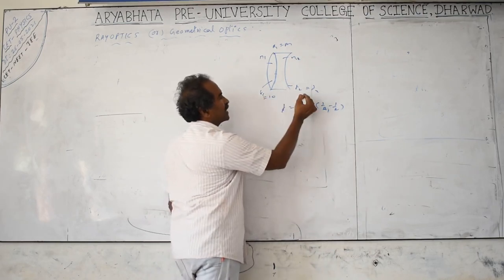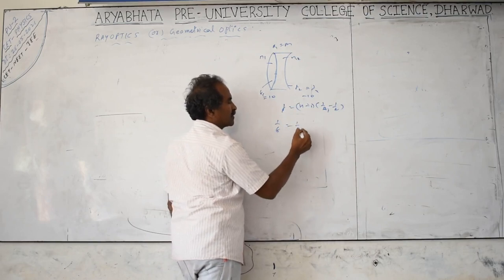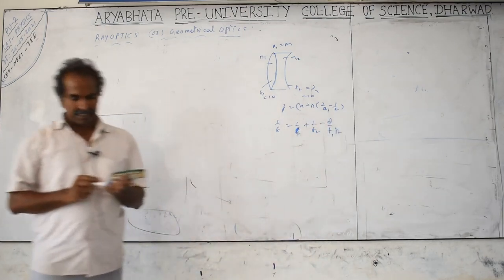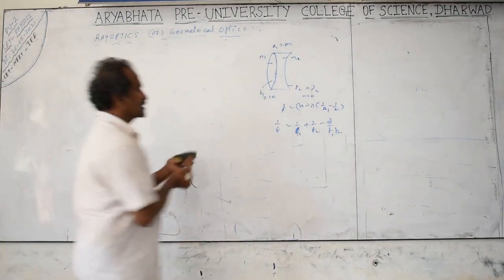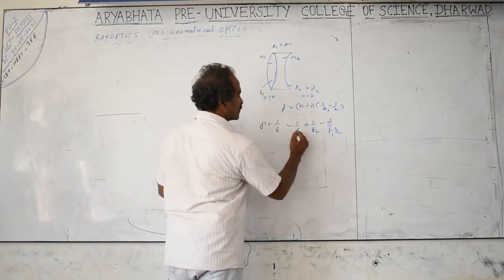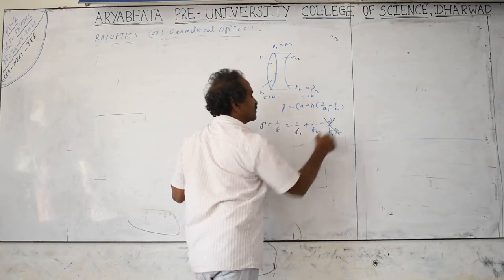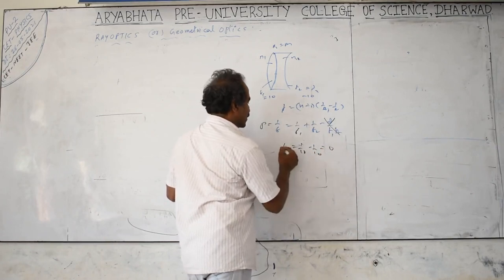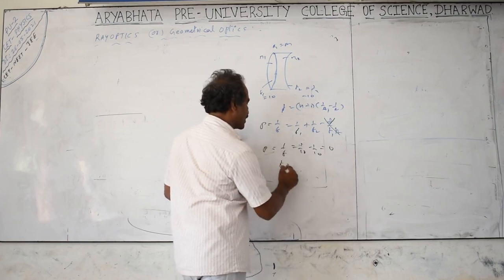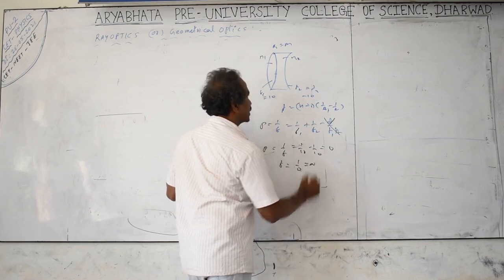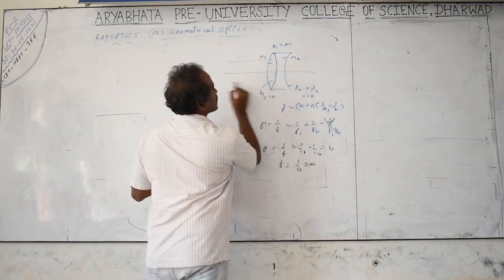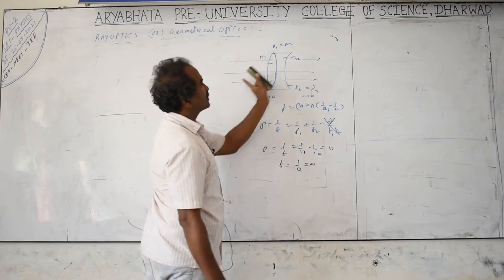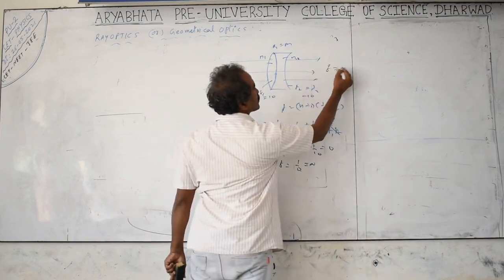For two lenses in contact (d = 0), the resultant formula is 1/f = 1/f1 + 1/f2. If f1 = +10 cm and f2 = −10 cm, then 1/f = 1/10 − 1/10 = 0. So focal power equals zero, meaning focal length equals infinity. Parallel rays entering come out parallel — like a parallel-sided glass slab.